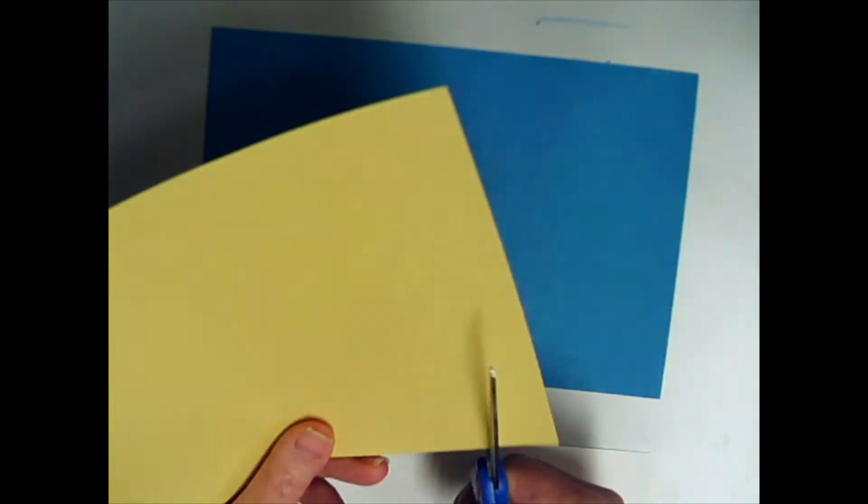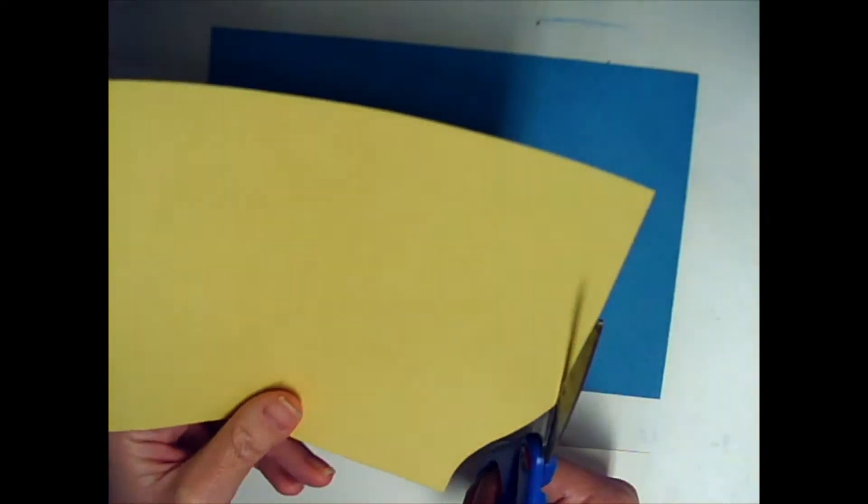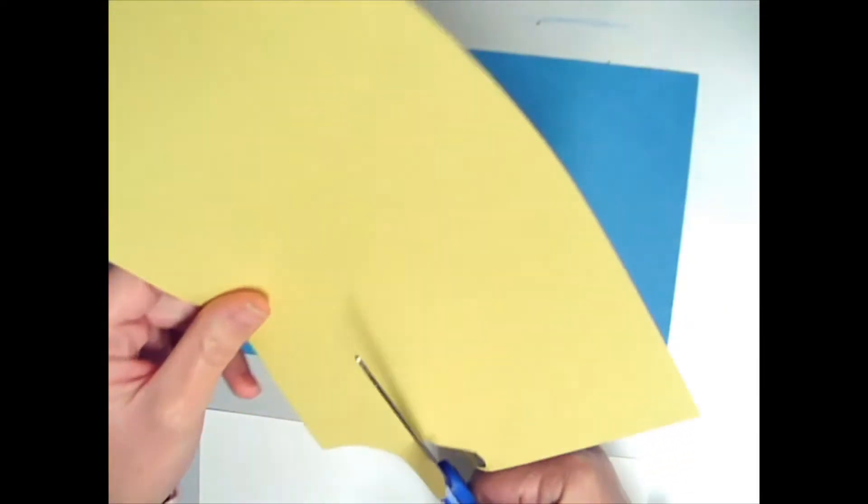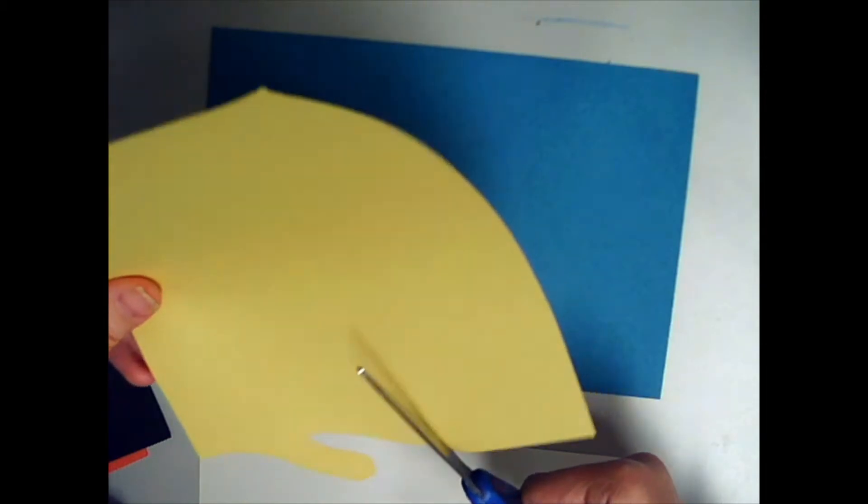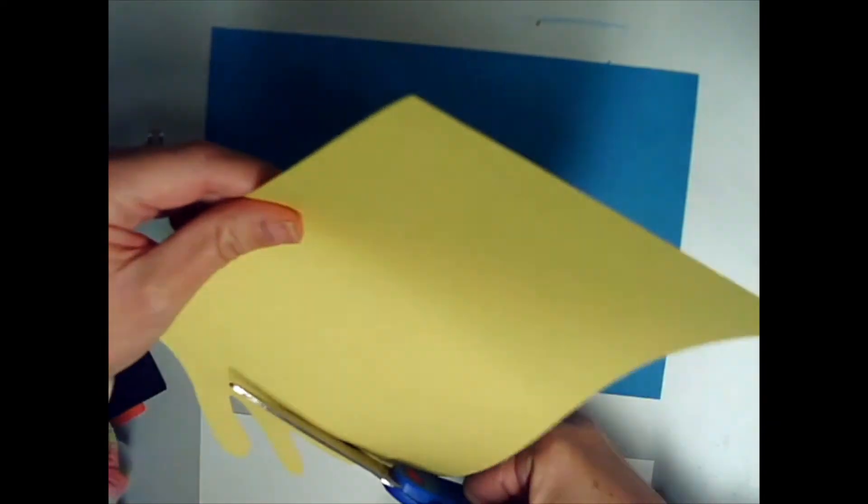When I looked at some of Matisse's artwork, it does feel like underwater coral or seaweed, maybe underwater plants. So right now, I am just cutting freely with my scissors. You could also take a pencil and draw out the shapes before you cut.